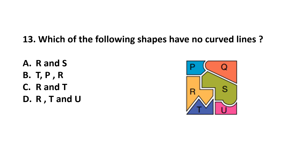Question number 13. Which of the following shapes have no curved lines? Shape P has curved lines, Q also has curved lines, R does not have any curved lines. S also has curved lines, U also has curved lines, and T does not have any curved lines. So the answer is R and T — option C.